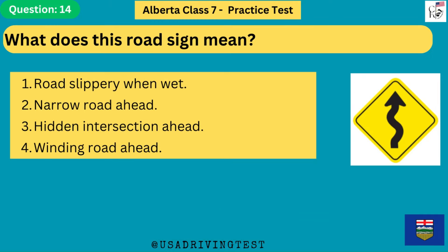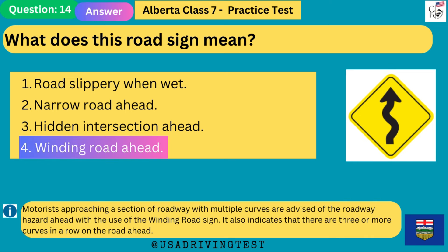What does this road sign mean? 1. Road slippery when wet. 2. Narrow road ahead. 3. Hidden intersection ahead. 4. Winding road ahead. The answer is 4: winding road ahead. Motorists approaching a section of roadway with multiple curves are advised of the roadway hazard ahead with the winding road sign. It also indicates that there are 3 or more curves in a row on the road ahead.